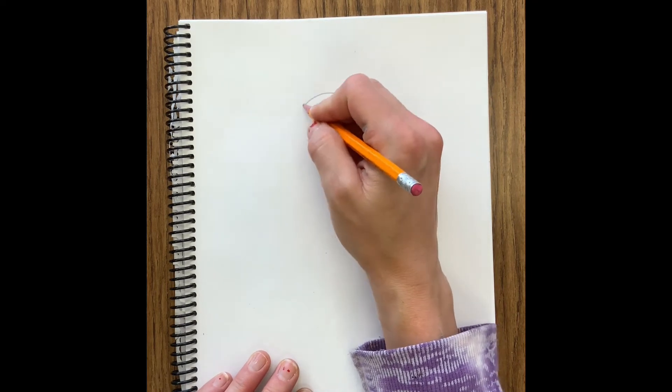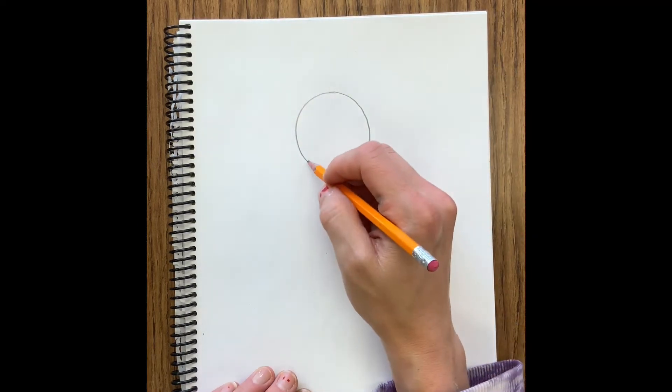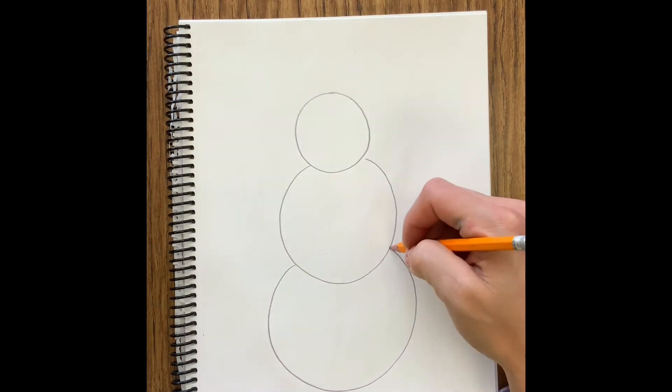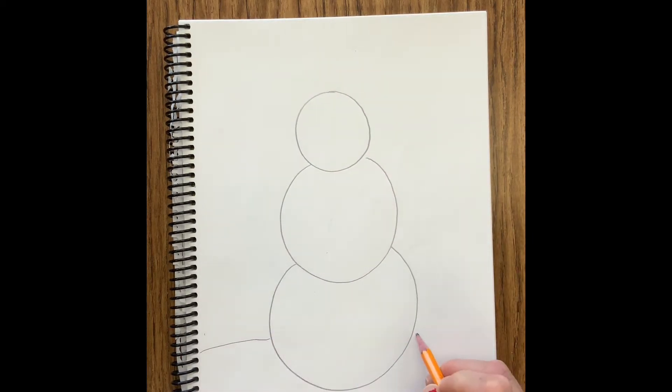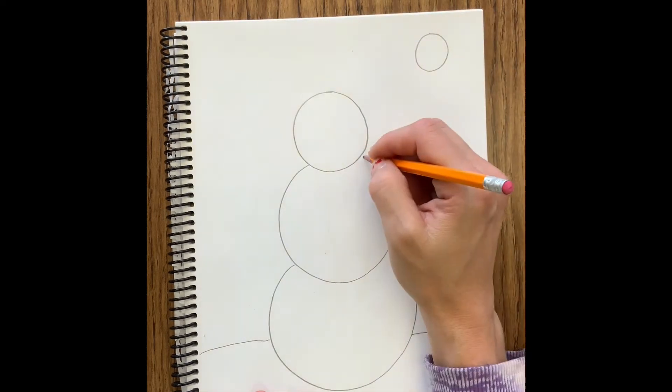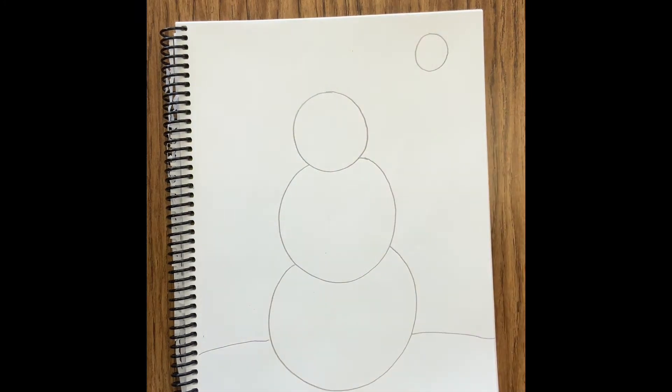To start I'm going to use a pencil and I'm going to draw a snowman, so I'm going to draw three different circles. The snowman is really the only thing in the picture so we can make that snowman nice and big. I am also going to add a horizon line for the ground and a moon into my picture.